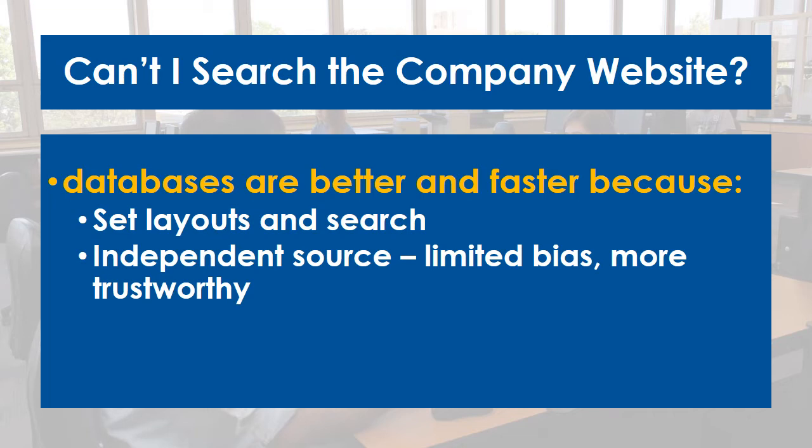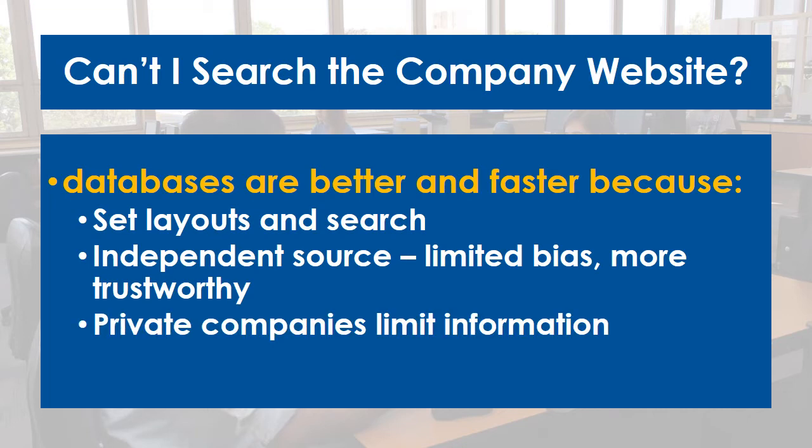Companies will do their best to hide reports and other information that shows failing performance. Private companies often limit the reports and information available to the public, which includes their competitors. Finally, databases are much easier to cite. Company websites often have no authors or dates listed, so they're difficult to cite, and there's no way to verify how current the information is. Databases are much easier.